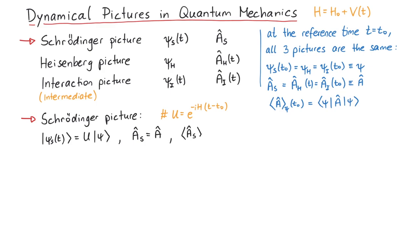The time-dependent expectation value is here given by psi u dagger a u psi. Note, that since for t equals t0, the time evolution operator is 1, the expectation value for t equals t0 agrees with our previous result.